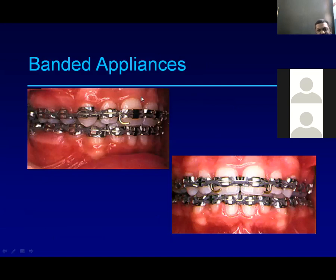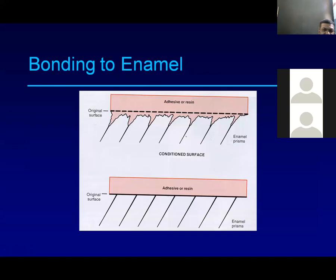This diagram shows a full arch banded appliance where every tooth is banded, and on that band the bracket is welded or soldered, and then the wire is passed. This was very difficult to work with and problematic for patients to maintain because it caused irritations. These early appliances were later discarded.